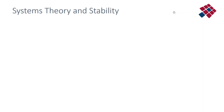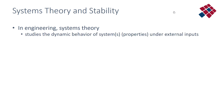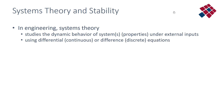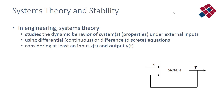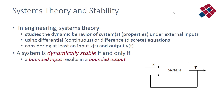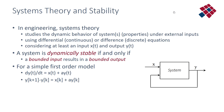Systems theory looks at stability based on the dynamic behavior of system properties under external inputs. This dynamic behavior is studied using differential equations in the continuous case, or difference equations in the discrete case, considering at least one input x and one output y as functions of time. A system is defined to be dynamically stable if and only if a bounded input results in a bounded output. In a simple first-order model, stability requires that the feedback coefficient be negative — because if it is not, you have a positive feedback which can cause instability.